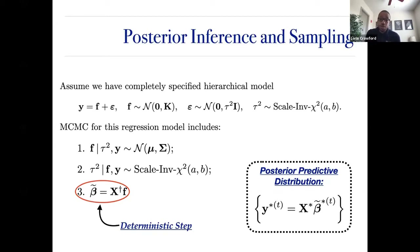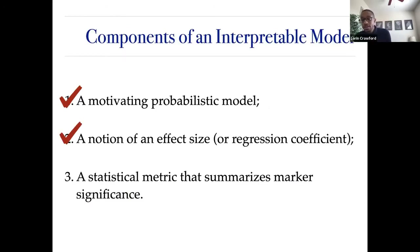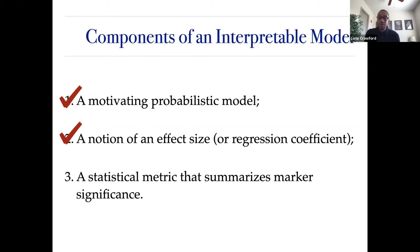These effect size analogs are really nice, but you still can't do variable selection with them — they're just weights. There's no notion of a null hypothesis with these beta-tildes. Sparsity in a nonlinear function space doesn't necessarily equate to sparsity in the input space. So we still need a statistical metric that summarizes marker significance. There are machine learning approaches like SHAP and other importance scores, but let me add another one: a metric with an intuitive null hypothesis.